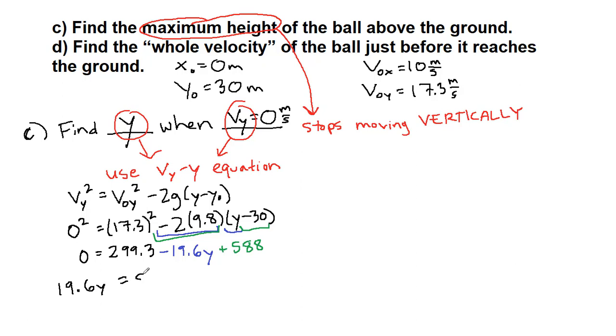We can add 19.6y to both sides and then we get 887.3, and then we will divide both sides by 19.6 to get our answer for the maximum height: 45.3 meters.